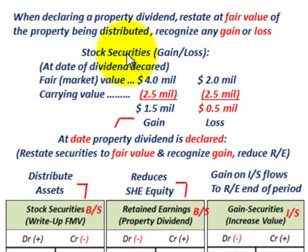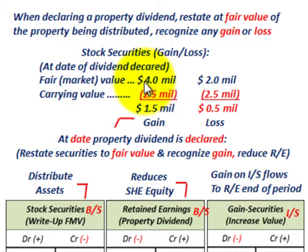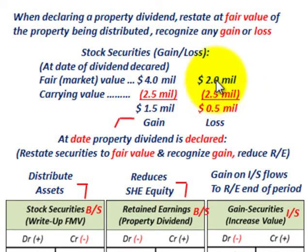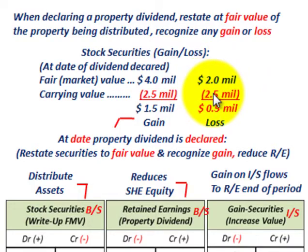At the date the dividend is declared, you determine any gain or loss based on fair market value. For the gain case, the fair market value is $4 million and the carrying value is $2.5 million, so the difference is a $1.5 million gain. For the loss case, the fair market value is $2 million and the carrying value remains $2.5 million, so the difference is a $500,000 loss because fair market value is less than carrying value.